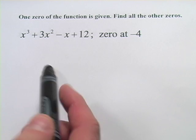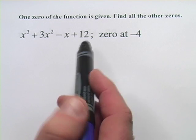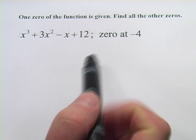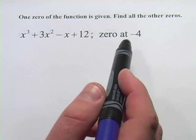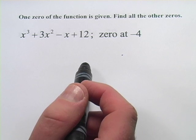In these problems, we have some polynomial functions, and we're supposed to find all of the zeros. In this case, we're given one of them, which is going to be a nice head start for us. So how should we approach this problem?